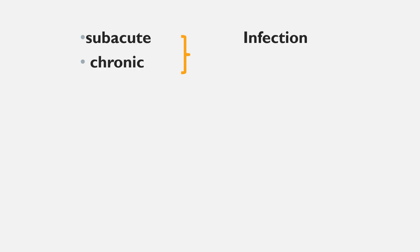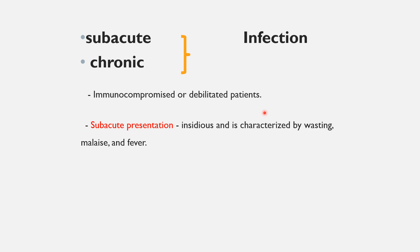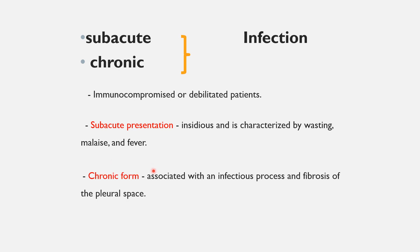The subacute and chronic forms are primarily related with infection, more commonly seen in immunocompromised or debilitated patients. The subacute presentation is insidious in onset and is characterized by wasting, malaise, and fever, whereas the chronic form is associated with an infectious process and fibrosis of the fluid response.